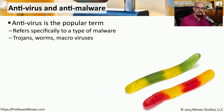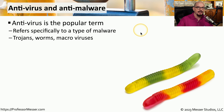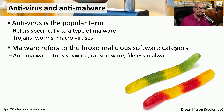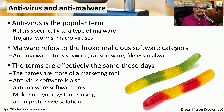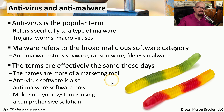Another security tool that's included with many operating systems these days is antivirus and anti-malware. These tools are used to identify malicious software, such as Trojan horses, worms, macroviruses, and other types of malware. Although malware is a very broad term that could incorporate both viruses and other types of malicious software, commonly malware is associated with spyware, ransomware, fileless malware, and other types of malicious code. The differences between those two are relatively minor, and the way that we use the software today, both terms tend to be interchangeable. So you'll commonly refer to antivirus software and anti-malware software as effectively the same software on your system.